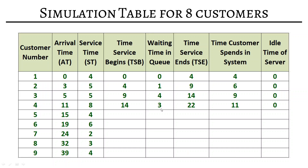Customer 5 arrives at fifteen but the system is busy until twenty-two, so service begins at twenty-two. The customer waited twenty-two minus fifteen equals seven minutes. Service ends at twenty-two plus four equals twenty-six. The customer spent four minutes of service plus seven minutes waiting, totaling eleven minutes. Idle time is zero. Customer 6 arrives at nineteen but the system is busy until twenty-six, so service begins at twenty-six. Waiting time is twenty-six minus nineteen equals seven minutes. Service ends at twenty-six plus six equals thirty-two. Total time in system: seven plus six equals thirteen minutes. Idle time is zero.